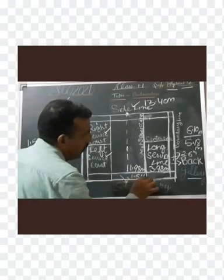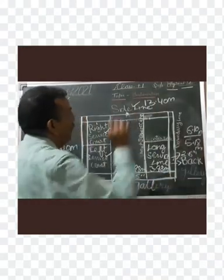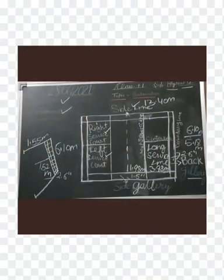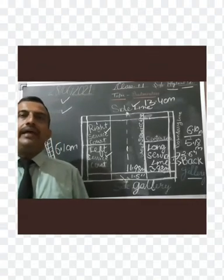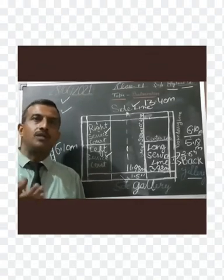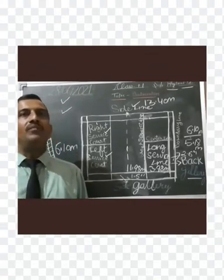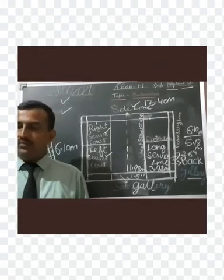The length of the racket is 68 centimeters and the width of the head of the racket is 23 centimeters. Next, the shuttlecock: the weight of the shuttlecock is 4.75 grams to 5.5 grams.